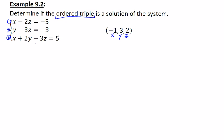We're going to take the first equation, x minus 2z is equal to negative 5, and substitute in negative 1 for x and 2 for z. So that's negative 1 minus 4 and we get a true statement. Negative 5 equals negative 5. So check mark here. That's good.